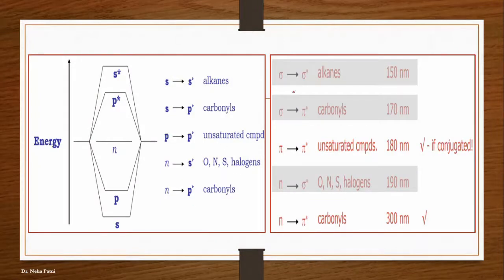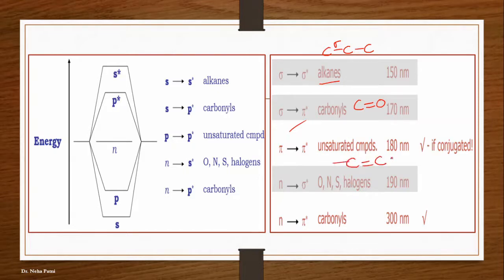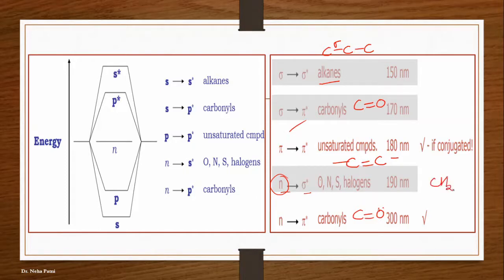Looking at a molecule's structure, you should be able to identify which type of transition is likely. For alkanes with only single bonds, sigma→sigma* is involved. For carbonyls with a double bond, n→pi* is possible. For unsaturated carbon-carbon compounds, pi→pi* is possible. When oxygen or nitrogen (with lone pairs) is present with a single bond, n→sigma* is the possibility. With a double bond and a lone pair, n→pi* is possible.